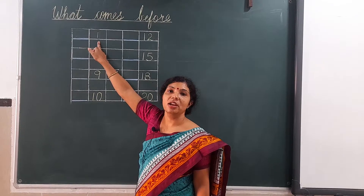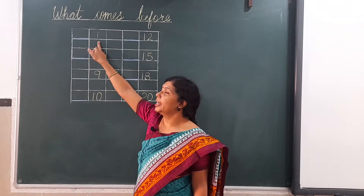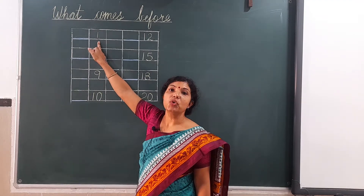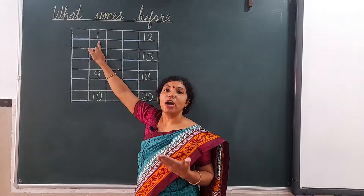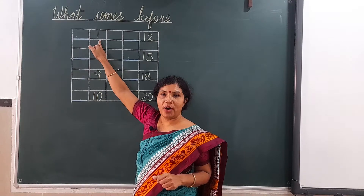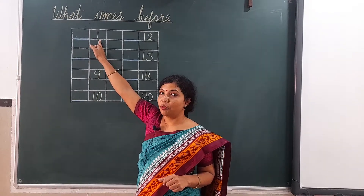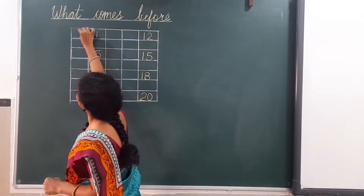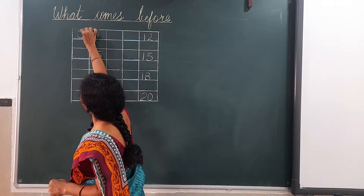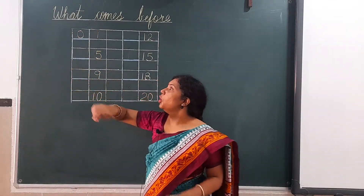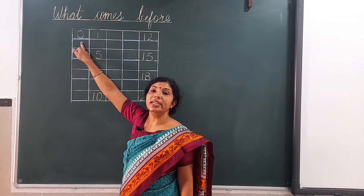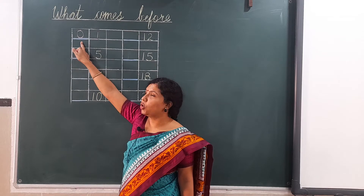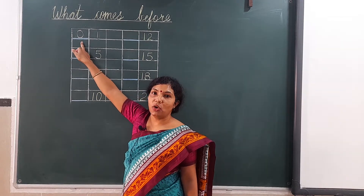Here it is written 1. We have to search what will come before 1. Before 1, 0 comes. So we have to write here 0. It means 0 comes before 1.